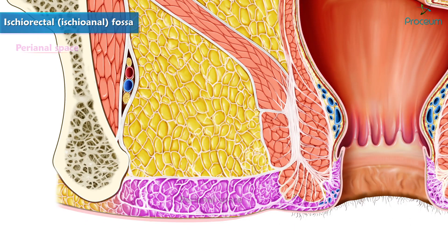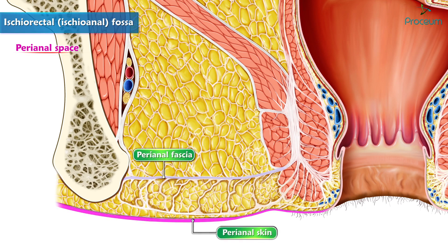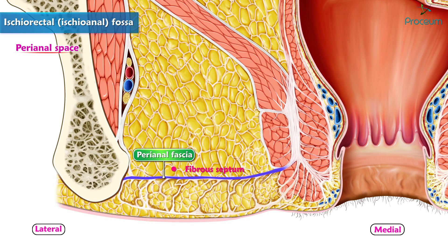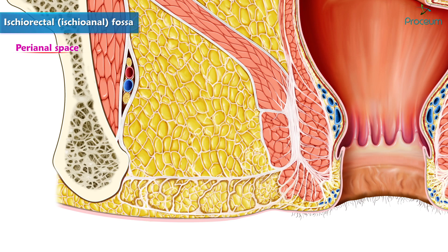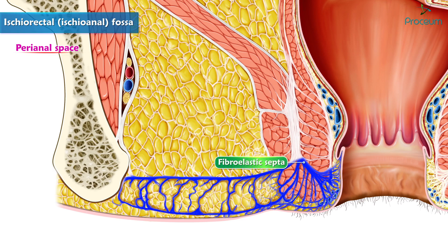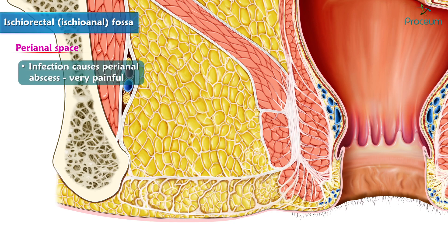The perianal space is situated at the termination of the anal canal, on each side of the anal orifice. It is bounded above by the perianal fascia and below by the perianal skin. The perianal fascia is a fibrous septum which extends from the white line of Hilton medially to the pudendal canal laterally. The perianal space is subdivided into numerous compartments by fibroelastic septa, and the fat within it is tightly arranged into small loculi. Infection in this space causing perianal abscess is therefore very painful.